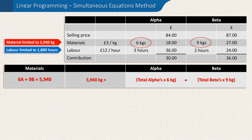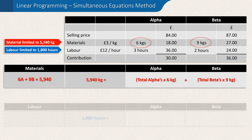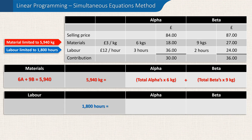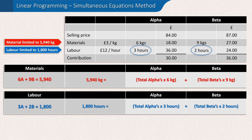We then followed the same principle for the 1800 limited labour hours and stated that the total hours available will equal the number of alphas produced times the three hours needed to produce each alpha, plus the number of betas produced times the two hours needed to produce each beta. This resulted in the equation: 3A plus 2B equals 1800.